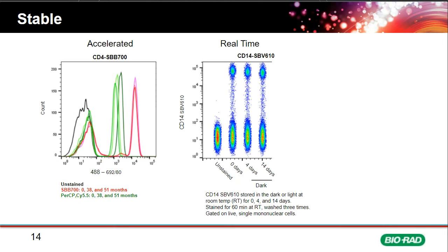Star Bright dyes are also very stable. Accelerated stability data shows Star Bright Blue 700 maintains its staining index over 51 months, in contrast to PerCP-Cy5.5, which is dimmer and decreases in staining index over time. Real-time data also shows stability for up to three years when stored at four degrees Celsius.